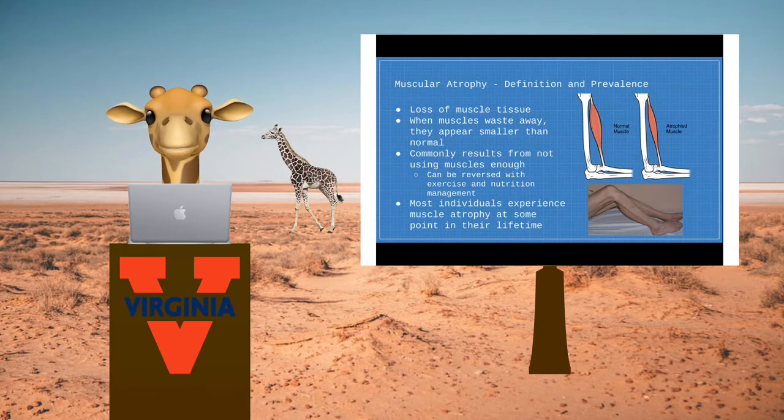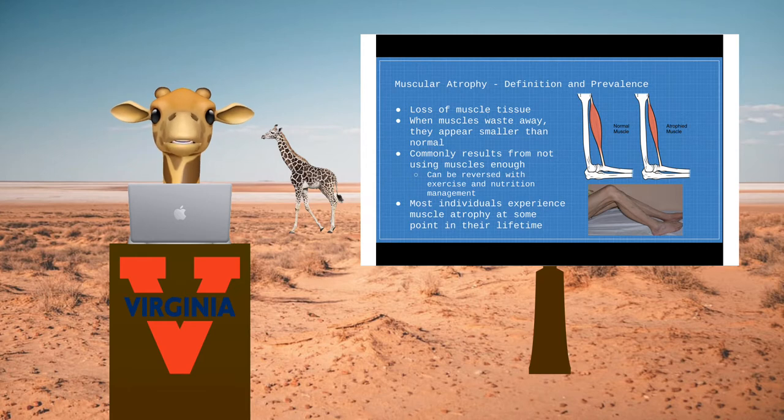Muscular atrophy, or muscle wasting, is a common occurrence characterized by a loss of muscle tissue. This condition causes muscles to appear smaller than usual. It typically results from lack of muscle stimulation and can be reversed through improved exercise and dietary habits.